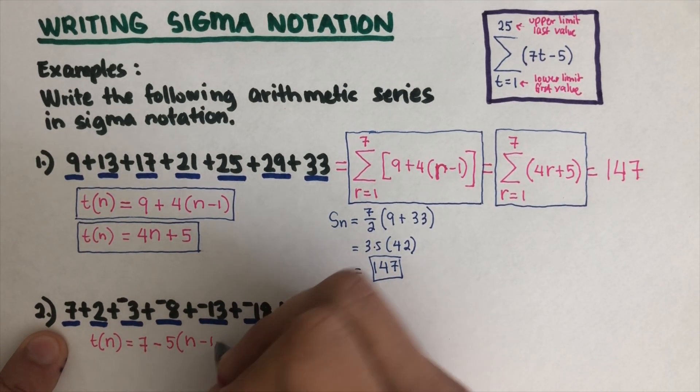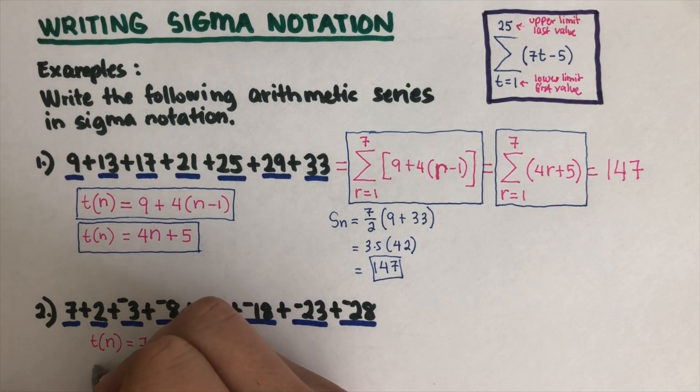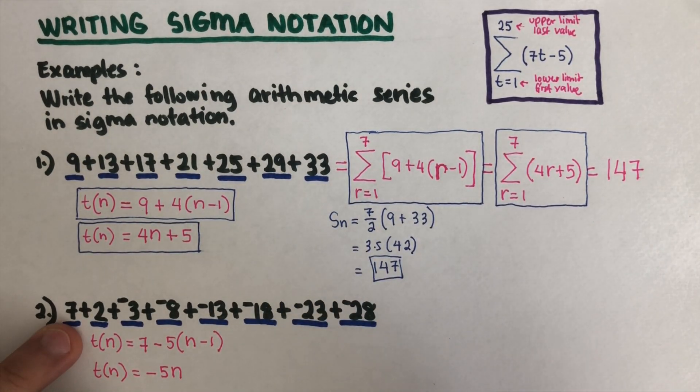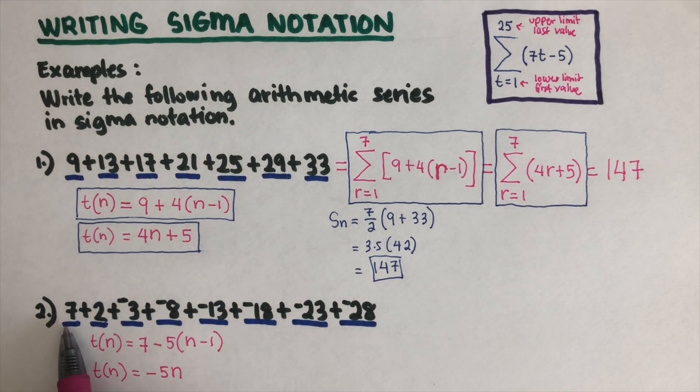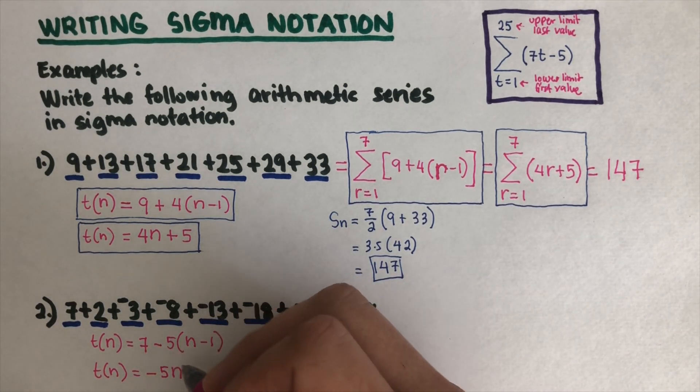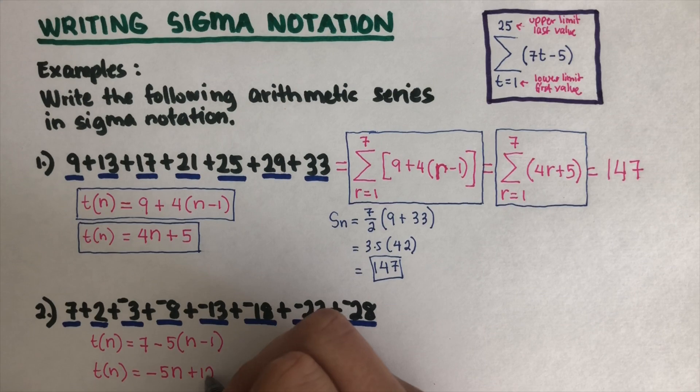The second equation would be t(n) is equal to how much does it grow by: negative 5n, and then the zeroth term. If we go minus 5 here, so we go plus 5 on the other way, that would be plus 12. These are the two equations.